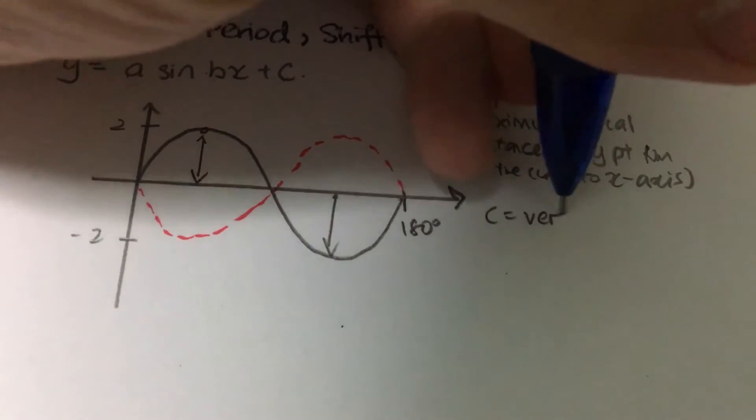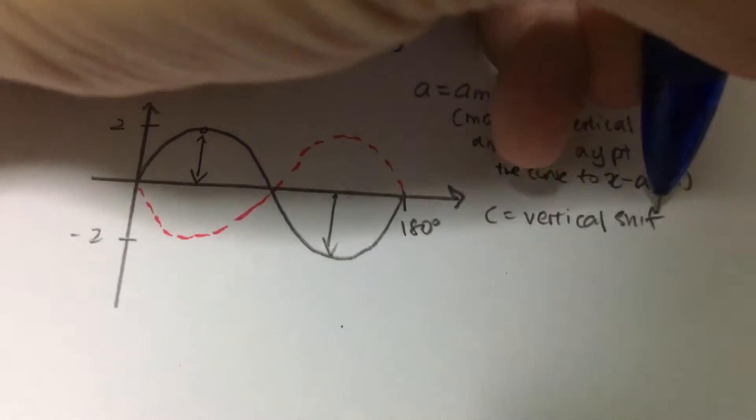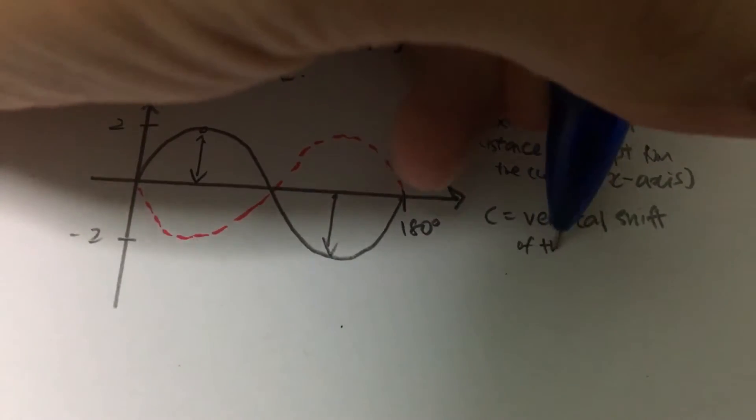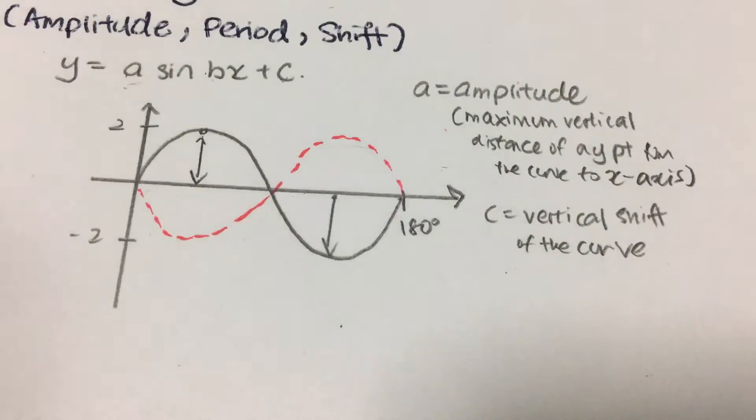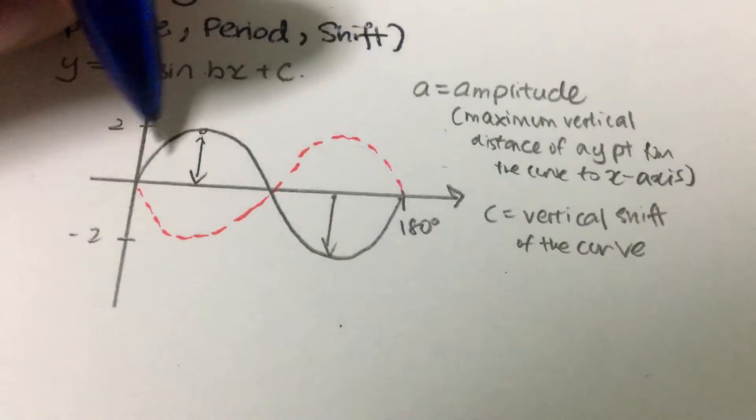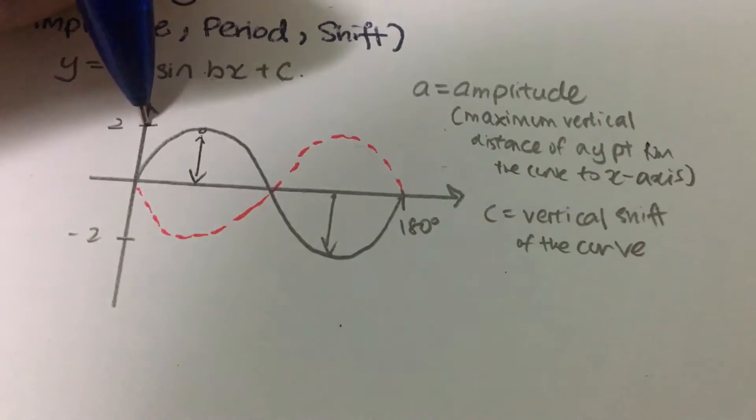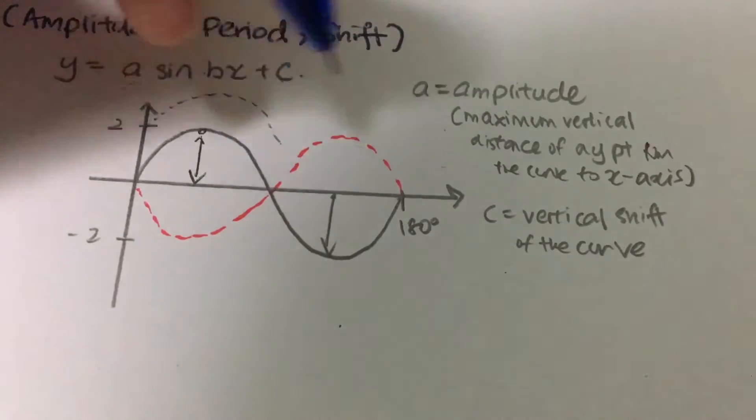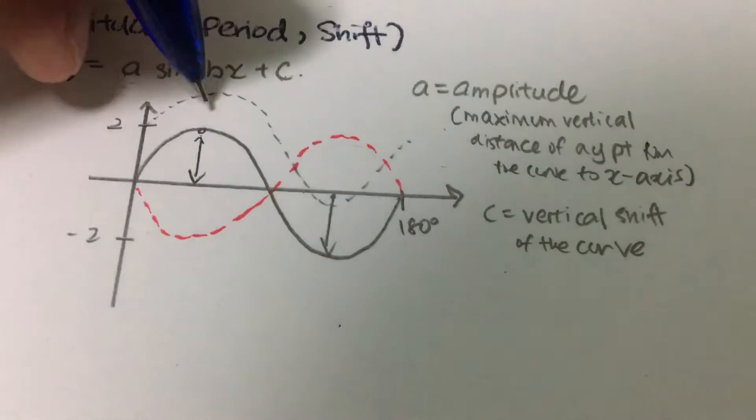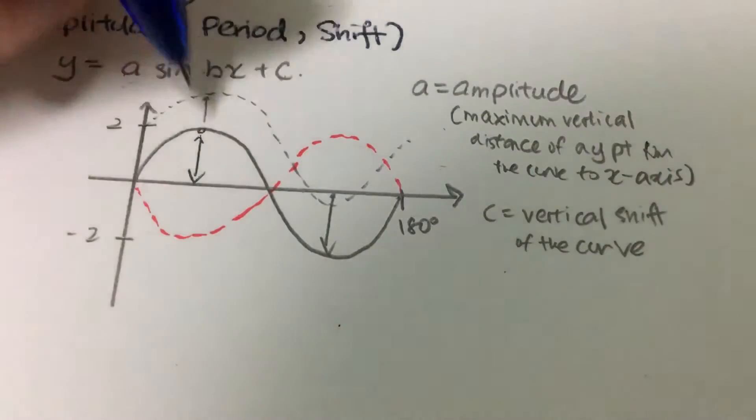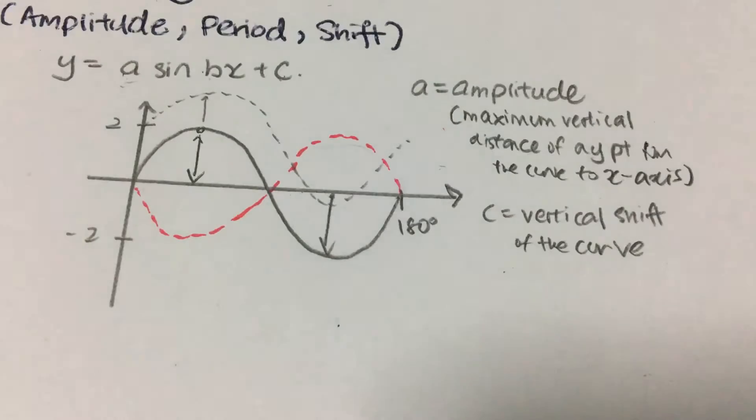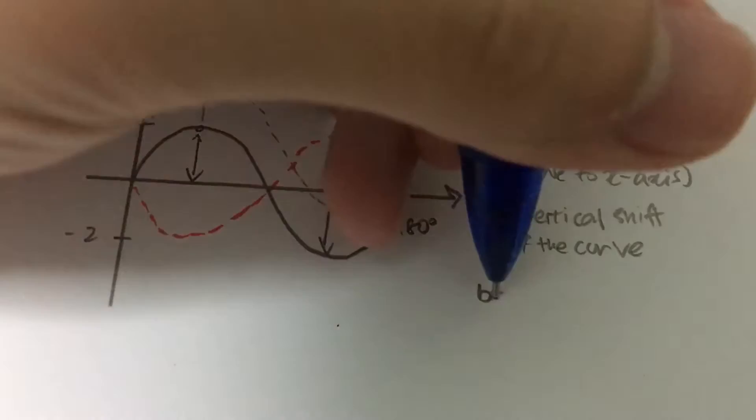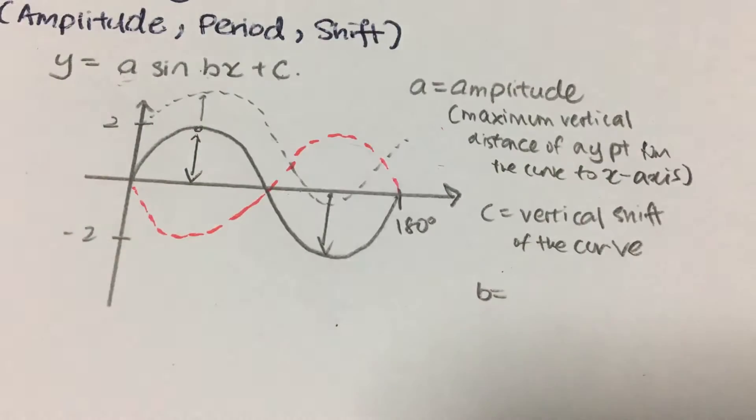So what is c then? So c basically means is the vertical shift of the curve. This vertical shift can be a negative vertical shift and a positive vertical shift. If it is a positive vertical shift, that means that this solid lines will shift upwards to this black dotted line. So this will represent a positive vertical shift. If it's a negative vertical shift, it will be this solid lines that will shift downwards. So c itself in the equation is the vertical shift.